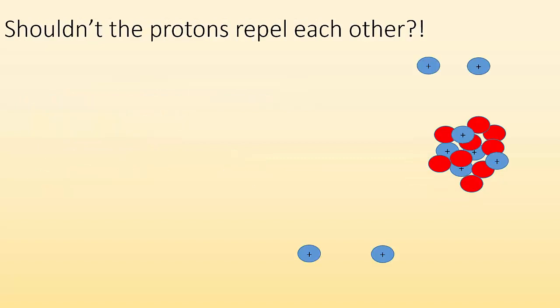Shouldn't the protons repel each other? They're both positively charged. How can we get a nucleus full of protons when these protons have the same charge and they're going to want to repel each other? How is that even possible?